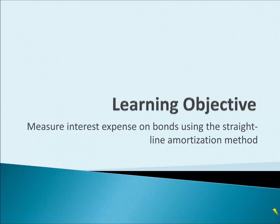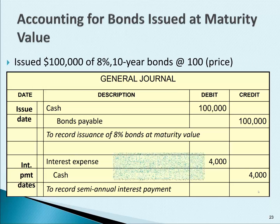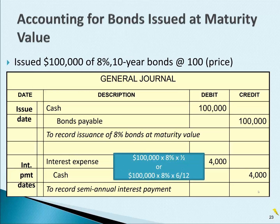The next learning objective is to measure interest expense on bonds using the straight-line amortization method. The journal entry to record issuing a bond payable at maturity value includes a debit to cash and a credit to bonds payable. In this example, maturity value is $100,000, so therefore we must be selling 100 bonds since they each have a maturity value of $1,000.